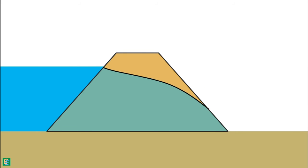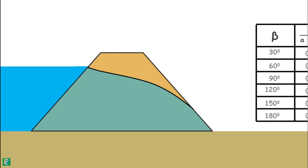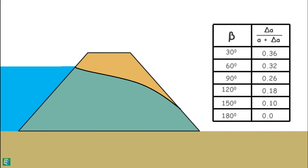This is how we construct the phreatic line for an earth dam when seepage water exits from the downstream face. We should keep in mind that Casagrande's chart is applicable only when the downstream slope angle beta is greater than or equal to 30 degrees.